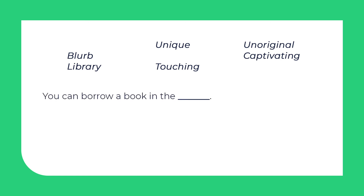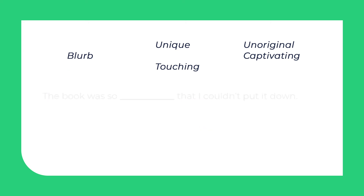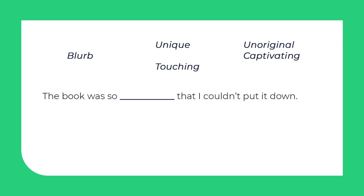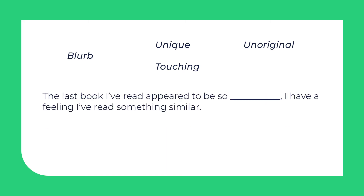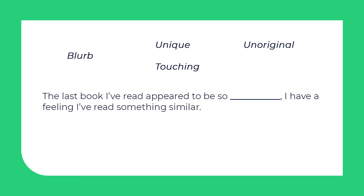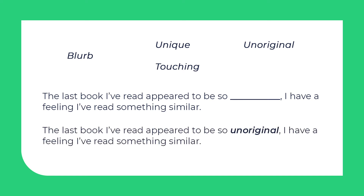Sentence 3: You can borrow a book in the library. Sentence 4: The book was so captivating that I couldn't put it down. Sentence 5: The last book I've read appeared to be so unoriginal — I have a feeling I've read something similar.